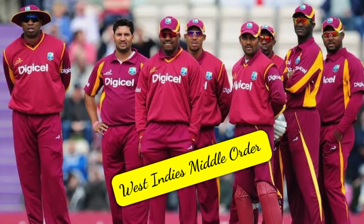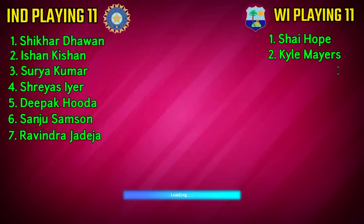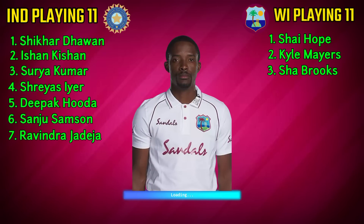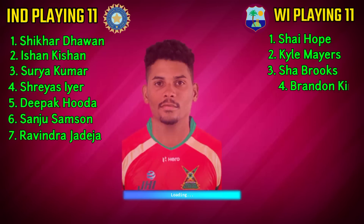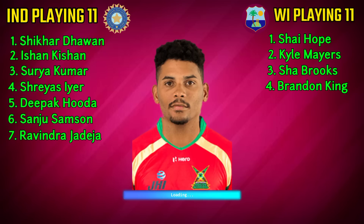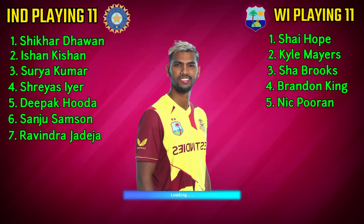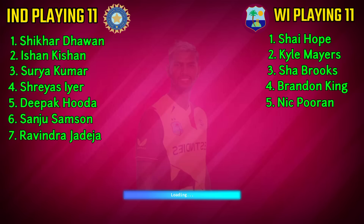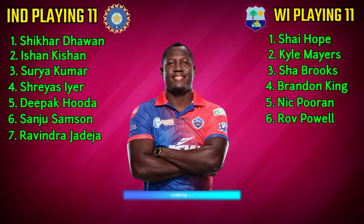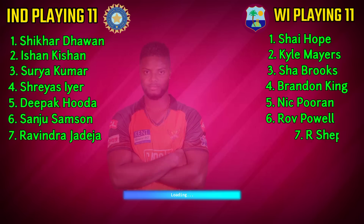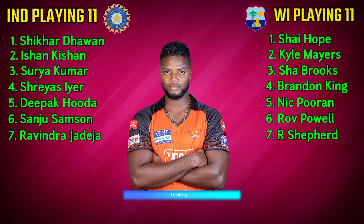West Indies team middle order: No.3 Shamarh Brooks, right-handed batsman. No.4 Brandon King, right-handed batsman. No.5 Nicholas Pooran, captain and batsman. No.6 Rovman Powell, right-handed batsman. No.7 Romario Shepherd, all-rounder.